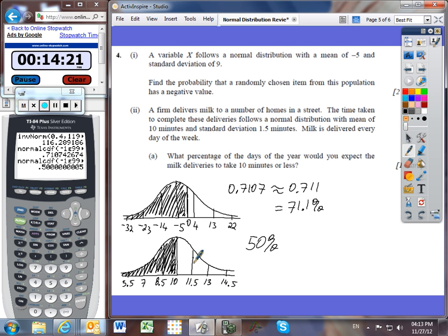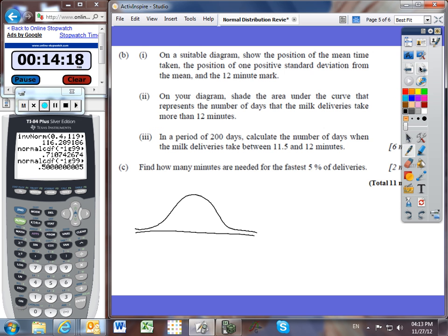This is one positive standard deviation to the right, so that's 11.5. There's our mean coming down to 10. One positive standard deviation to the right is 11.5. Here's 12.